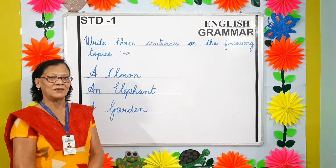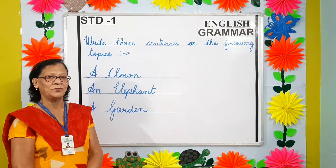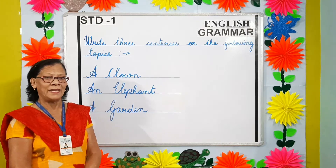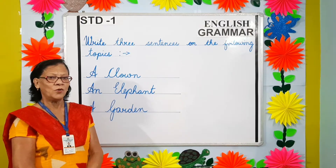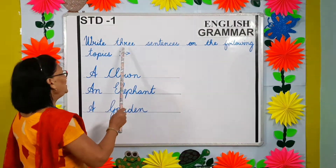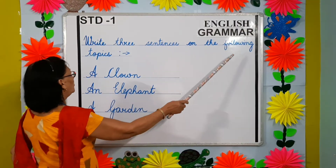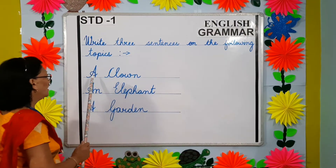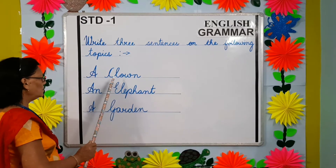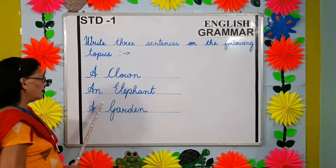Good morning parents and my dear students. Today I am going to teach Standard 1 English Grammar. We are going to learn how to write three sentences on the following topics: a clown, an elephant, a garden.